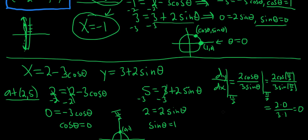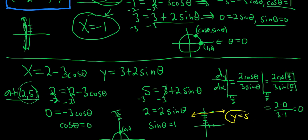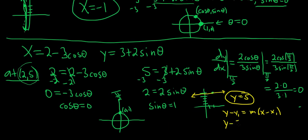A slope of 0 means a horizontal line passing through (2, 5), so the equation is y = 5. We can verify this using the point-slope formula: y - 5 = 0·(x - 2), which gives y - 5 = 0, so y = 5. Same answer via algebra.